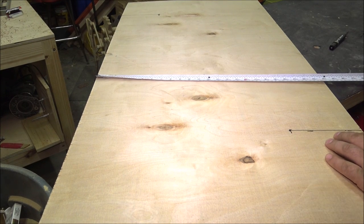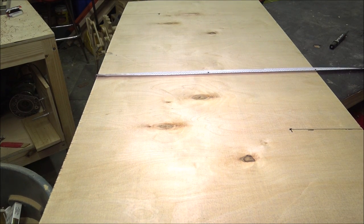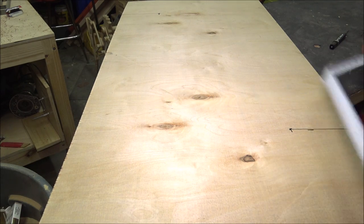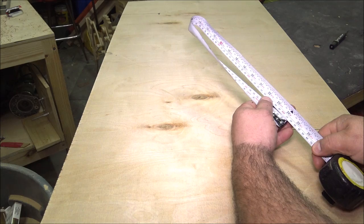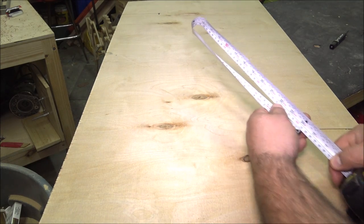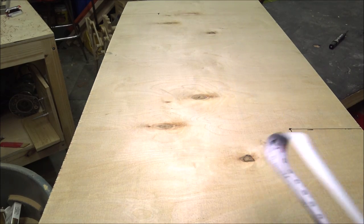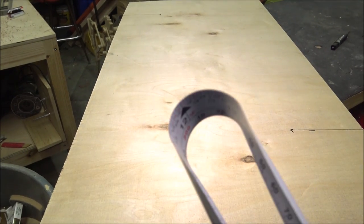Now this next trick is one that I'm sure many of you know but for those of you who don't this is such a valuable tip I wanted to share it. If you need to find the center mark of any measurement, simply fold your tape measure over, put the tip on that measurement, and at the apex of the circle where the fold is, is exactly half the distance.